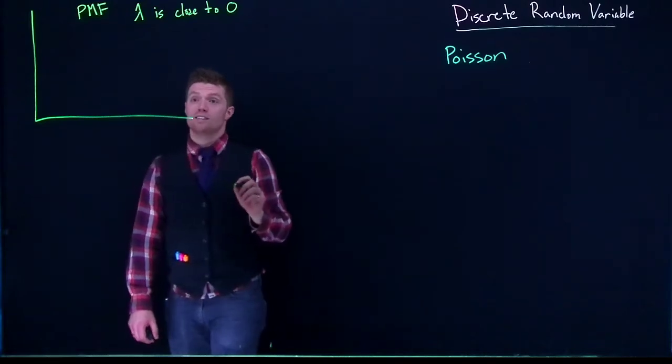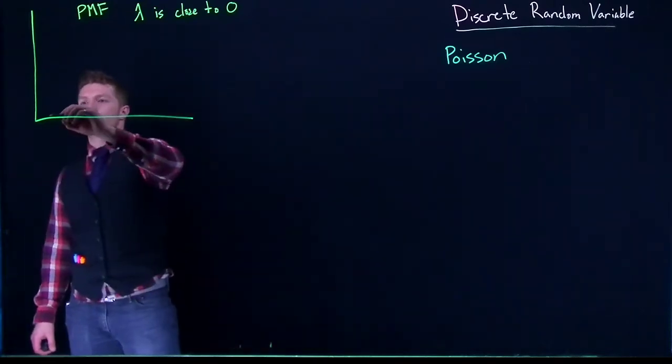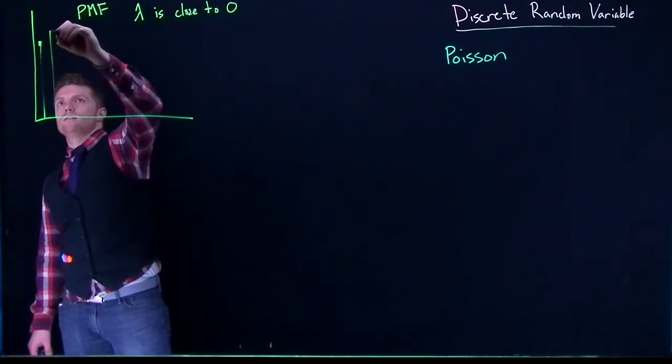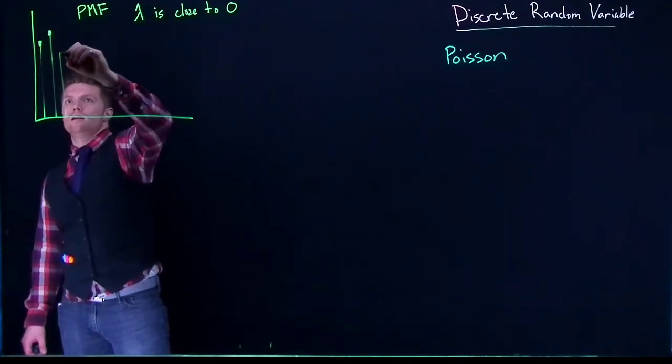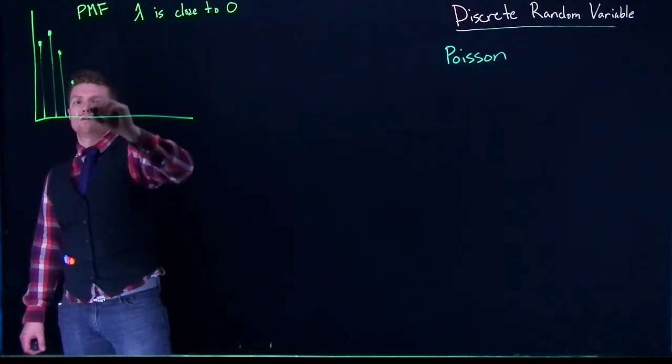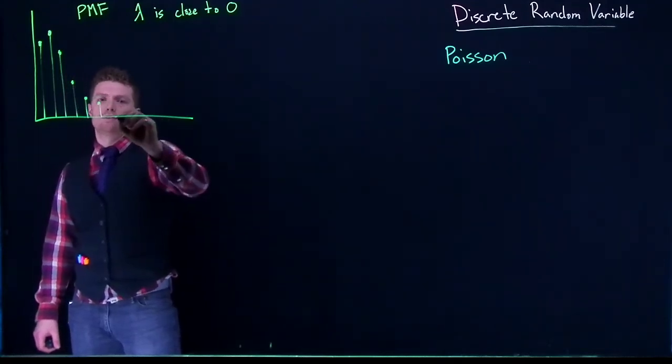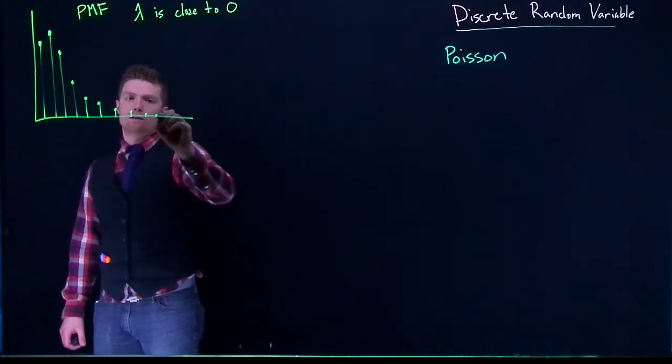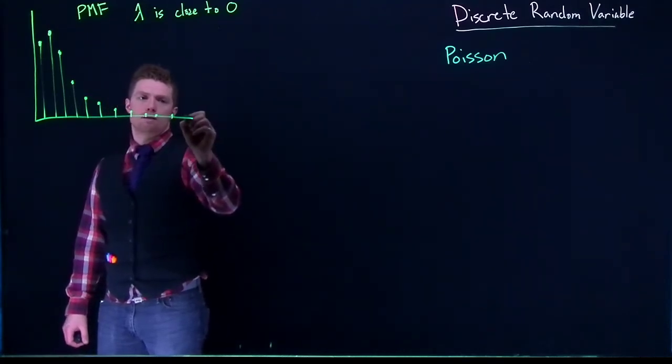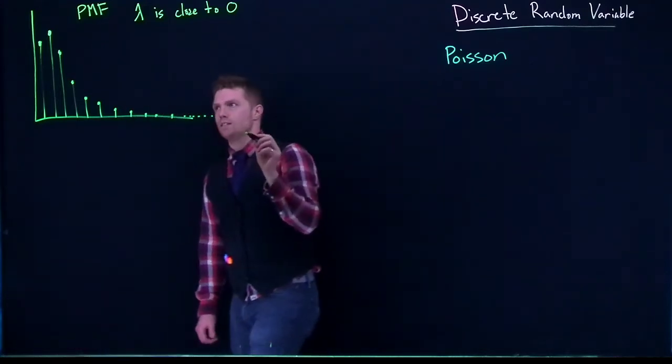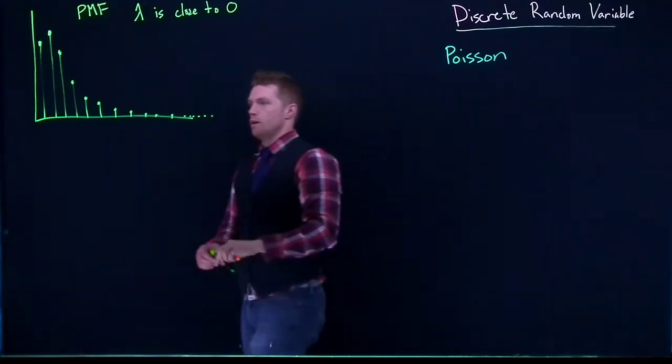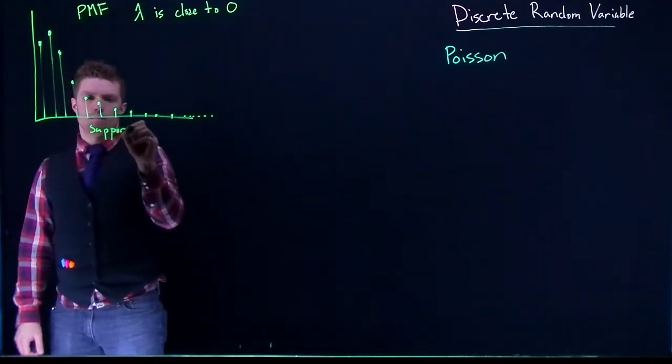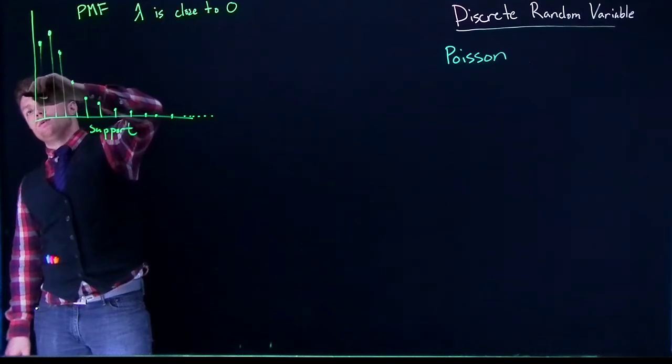What you're going to see is a distribution that kind of looks like this where we've got high probabilities, high probabilities, and then they're kind of dropping off, going down and down and down like that. Notice how I put the dots on. I put them on there for a reason. So this is our support, and this is the probability.